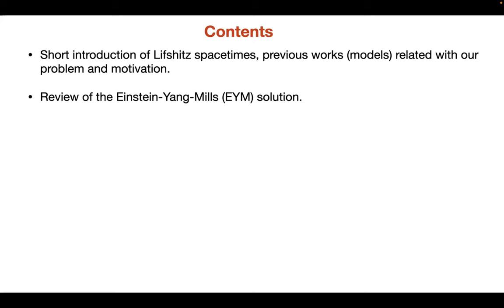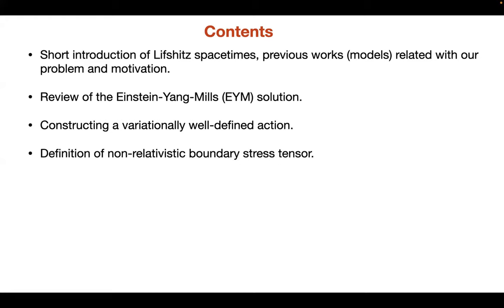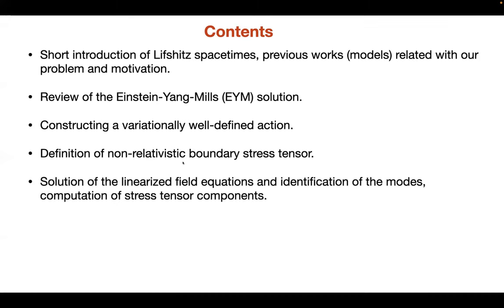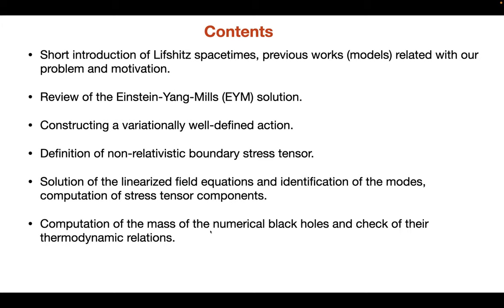Then I will review the Einstein-Yang-Mills solution that I found before in 2014. On top of this, I will give you how to construct a variation of a well-defined action for this Einstein-Yang-Mills model. Following this well-defined action, I will give the definition and construction of the non-relativistic boundary stress tensor. For this, I will follow Ross and Simon Ross and Saremi's construction. The next chapters will be about the application of this stress tensor. I will check whether it is finite in linearized field equations and also check the mass of the numerical black holes with this stress-energy tensor. Finally, I will conclude.